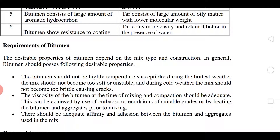Next, there should be adequate affinity and adhesion between the bitumen and the aggregates used in the mix. With proper adhesion only there will be proper bonding between the aggregate and the bitumen. If the aggregate surface is smooth, bitumen does not have proper coating properties, making it difficult to maintain a good pavement structure — the pavement fails because of improper bonding between the aggregate and bitumen.